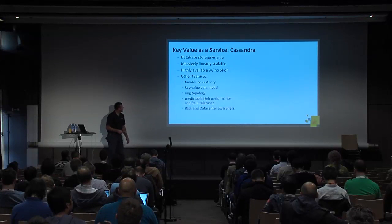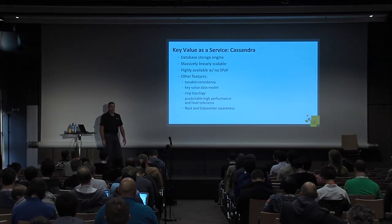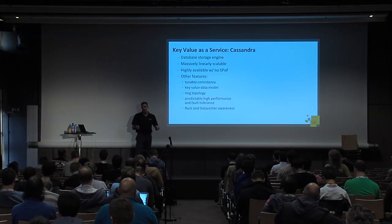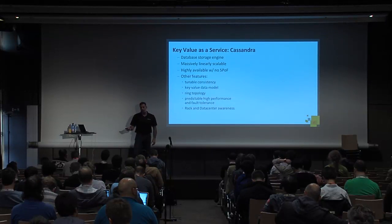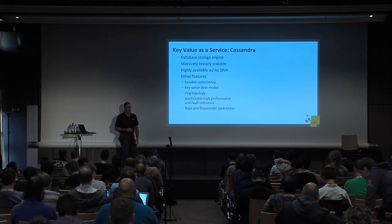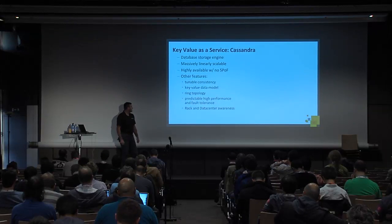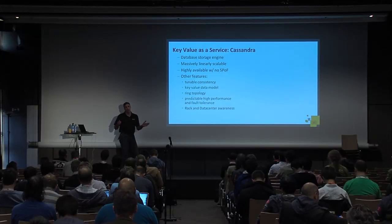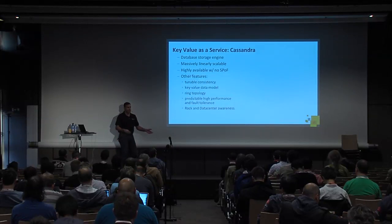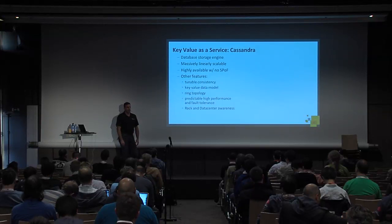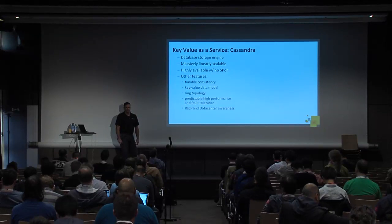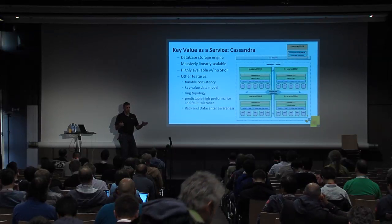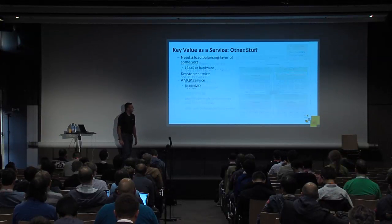If one Cassandra node goes down, it communicates that via the gossip protocol. It's got tunable consistency within the CAP theorem — depending on what you'd like to do, you can tweak and tune how you want it to behave and the performance characteristics you need for your application. It uses a ring topology and has very predictable high performance and fault tolerance. You scale linearly — just add new nodes and you get linear scale. That was proven out with the Google test, using roughly 200-plus servers to achieve a million queries per second.